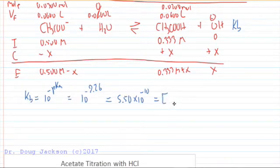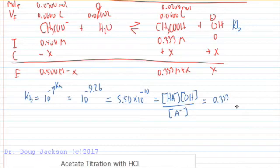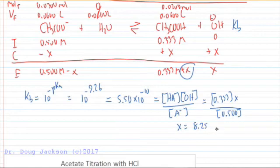Kb equals, like any equilibrium constant, the products - conjugate acid times hydroxide - divided by any aqueous reactants, acetate or A minus. We plug in our values at equilibrium. HA is 0.333 molar plus x, but because our Kb is so small, we anticipate x is going to be negligible, so we can drop that out. 0.333 times x divided by 0.500. We solve for x, which is the concentration of hydroxide, and get 8.25 times 10 to the minus 10 molar in hydroxide.